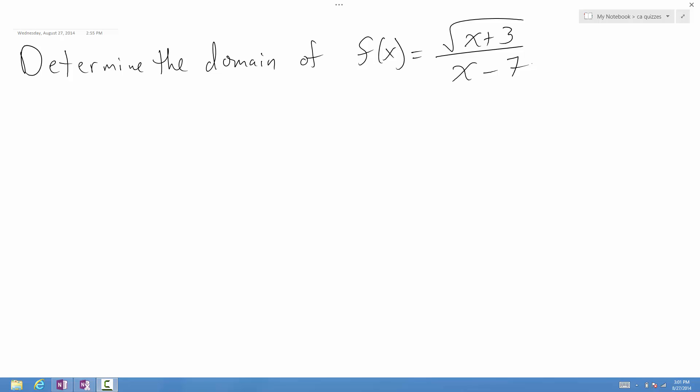So the first thing that I'm going to do is I'm going to focus on that square root. Now we know that for that square root, if we just thought of this function, g(x) equals the square root of x plus 3, then to determine the domain of this function, we would need x plus 3 to be greater than or equal to 0. And so then solving that, we have x is greater than or equal to negative 3.